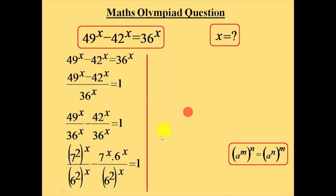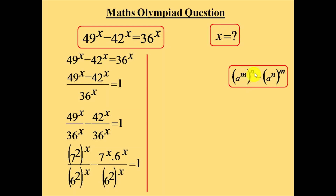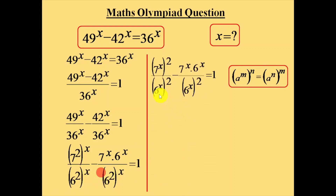We have a formula: a power m, whole power n, is equal to a power n, whole power m — so the powers interchange their places. When we apply this formula here, the 2 will go outside and the x will come inside. Similarly, 6 squared whole power x will become 6 power x whole power 2. So this equation will become 7 power x whole power 2, over 6 power x whole power 2, minus 7 into 6 power x, over 6 power x whole power 2.